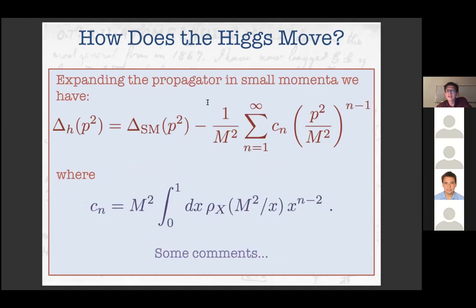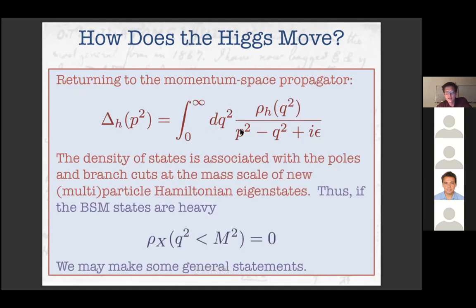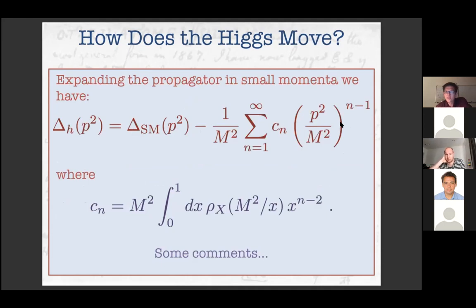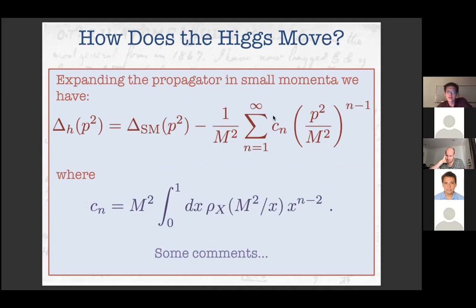Expanding the propagator in small momenta — since rho_x vanishes below M squared for heavy BSM states — we can Taylor expand when p squared is smaller than M squared. We get the standard model piece plus an extra piece depending on heavy BSM states. This is essentially the EFT limit of the dispersion relation: the full two-point function equals the standard model one plus a Taylor series in p squared over M squared with coefficients c_n, which we can rewrite by relabeling integration variables.